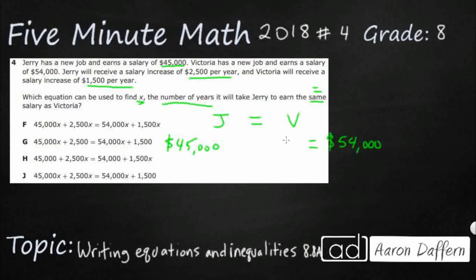But their increases are going to be slightly different. Jerry's increase is $2,500 per year. So that lets me know that I'm going to use multiplication there. So $2,500, and then X is being used to represent the number of years. So $2,500 times X. And then Victoria has got $1,500.